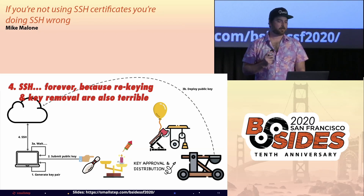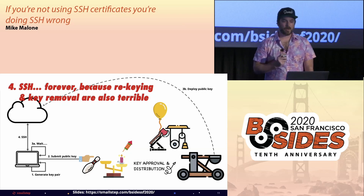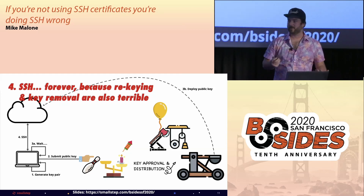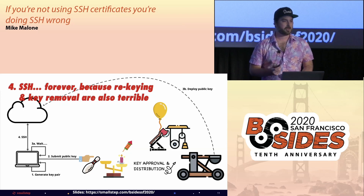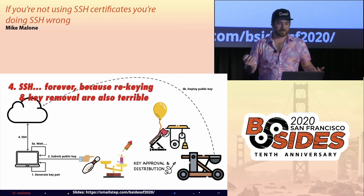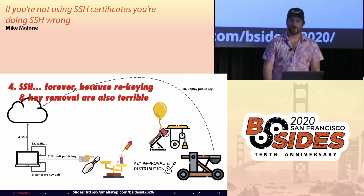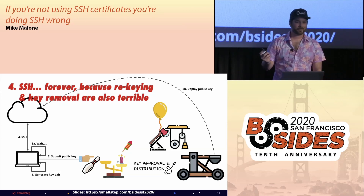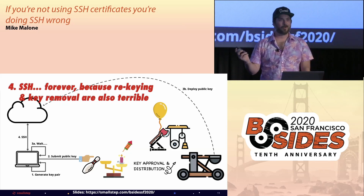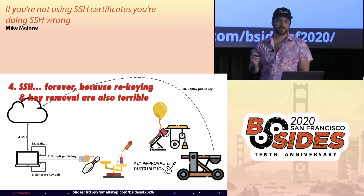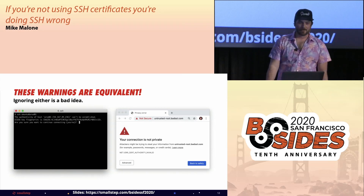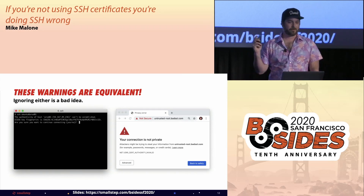Removing keys to deprovision access is also manual. You have all of these keys sitting around on hard drives for people like your CTO and VPE who SSH to a machine once a year. And if you forget to deprovision access when you offboard someone, you might give a disgruntled former employee access to prod. All of this is pretty terrible, but when you SSH to a host for the first time, you get this warning. You've probably seen it before.